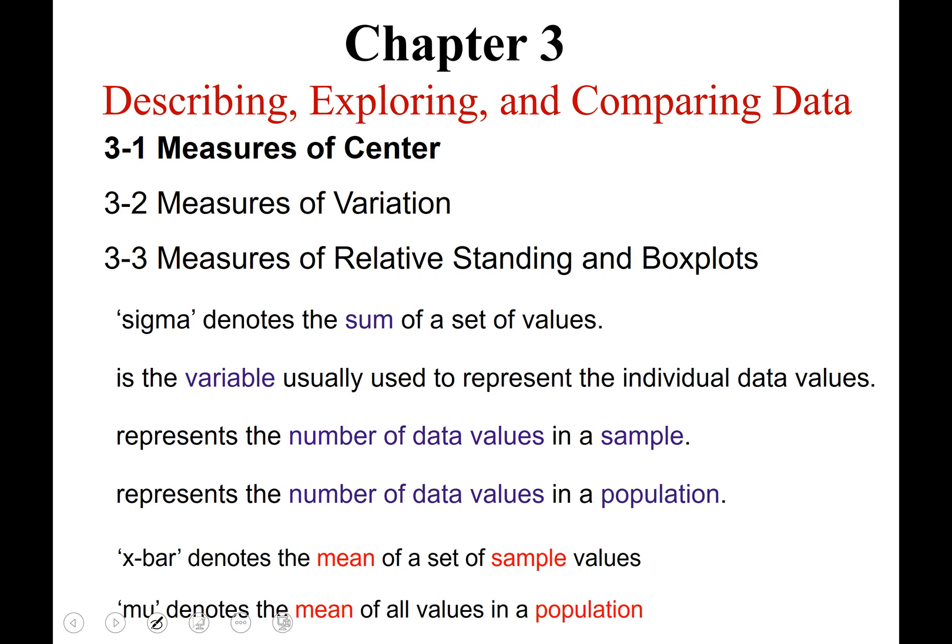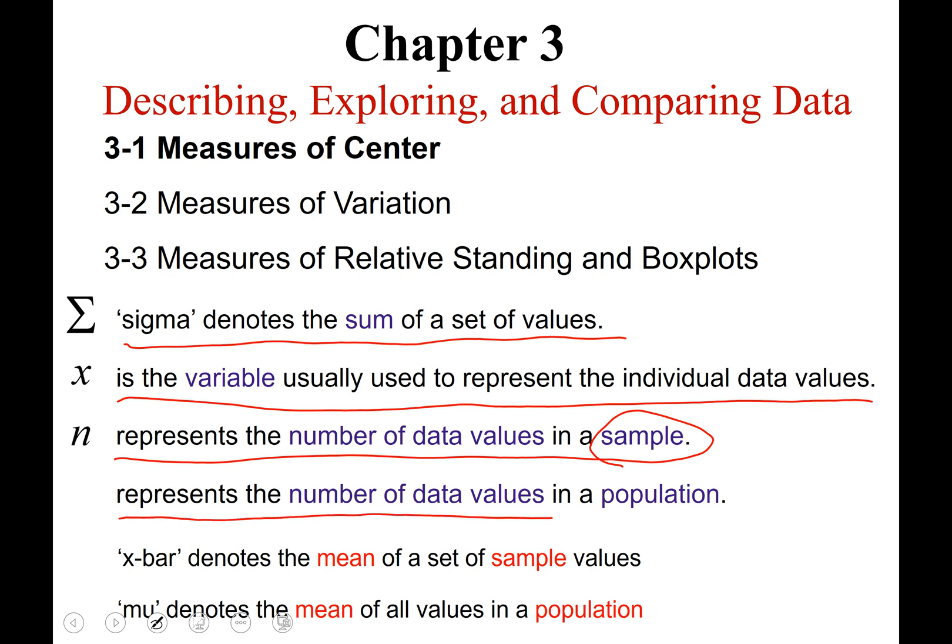Okay, before I go to the next slide, I want to go over some new notation. The first one is a symbol called sigma, and it denotes the sum of a set of all values. The second one is the variable used to represent the individual data values, a lowercase x. The next symbol represents the number of data values in a sample, lowercase n, whereas the next one represents the number of data values in a population, capital N.